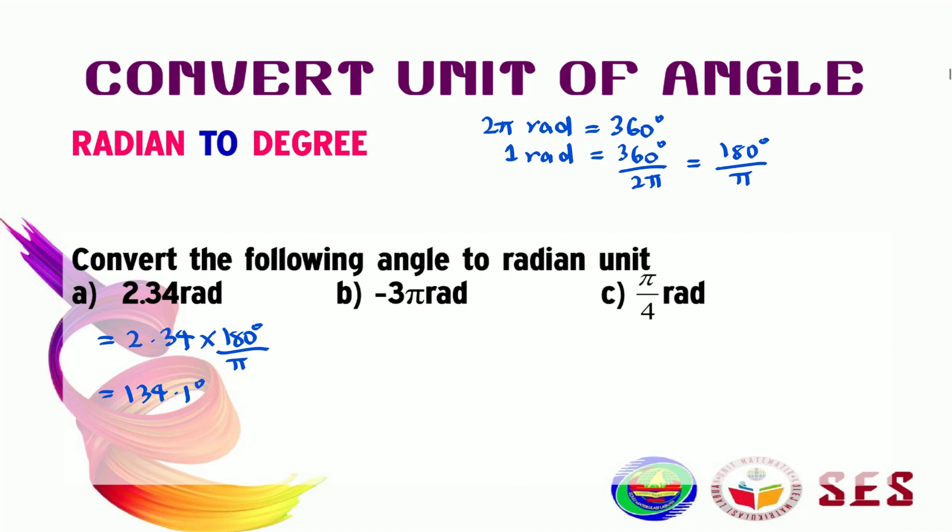Want to try again? We'll do the next one together, and then you're going to do question C on your own. Now, let's see question B. We have negative 3π radian. To convert this to degrees, we have negative 3π multiplied by 180 degrees over π. And we know that we can cancel this π. Our final answer for this one is negative 540 degrees.